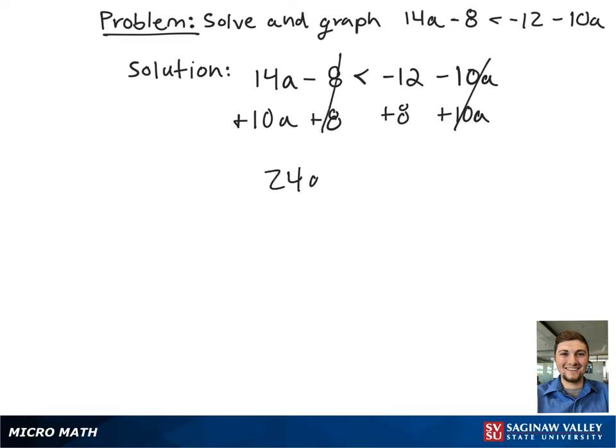This results in 24a is less than negative 4. Next, we want to get a by itself, so we're going to divide both sides by 24.